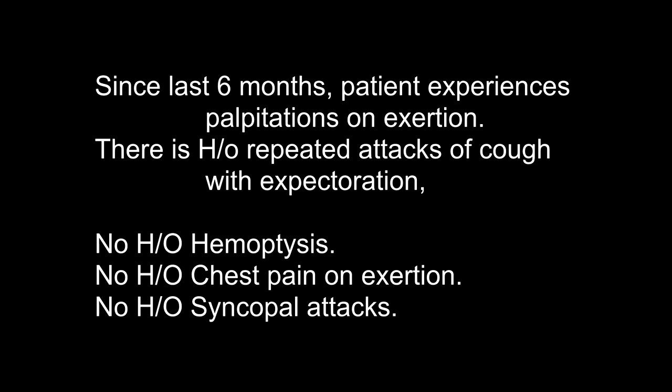There is history of repeated attacks of cough with expectoration, no hemoptysis. When do you get hemoptysis with a cardiac lesion? Hemoptysis is commonly seen in mitral stenosis. It may be a large bout due to pulmonary infarction or rupture of dilated pulmonary vessels in pulmonary hypertension, or blood-tinged sputum due to pulmonary venous congestion or bronchitis, or pink frothy sputum in acute pulmonary edema. These patients get repeated cough due to pulmonary congestion, pulmonary edema, or superimposed infections.